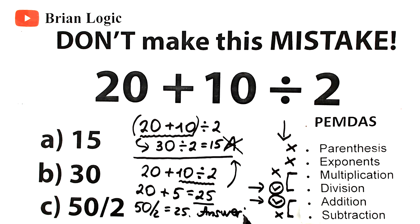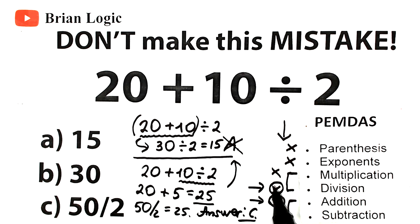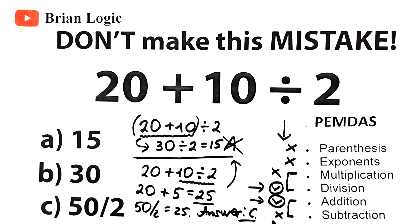I hope you understand the explanation and learned something new about the order of operations. Many students have difficulties with the multiplication and division part. Multiplication and division are grouped together because they are inverses — they have the same priority. When multiplication and division occur together, compute the operation from left to right. The same precedence applies to addition and subtraction, which also have the same priority as each other.